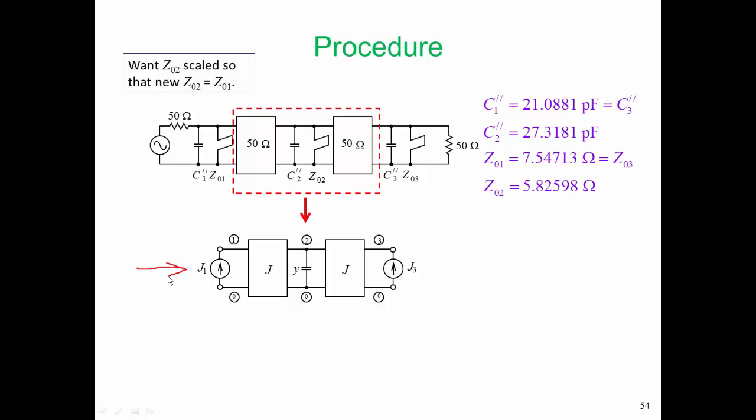Now often when we do equivalences, we use ABCD parameters. But for here, it's really the admittance that makes the analysis a lot easier. And we're going to use the admittances because we're going to equate two circuits by building the nodal admittance matrix of each of those circuits.